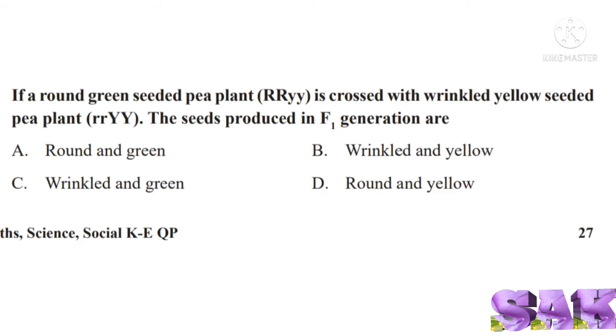Next question: if a round green seeded pea plant (RRyy) is crossed with wrinkled yellow seeded pea plant (rrYY), the seeds produced in F1 generation are.